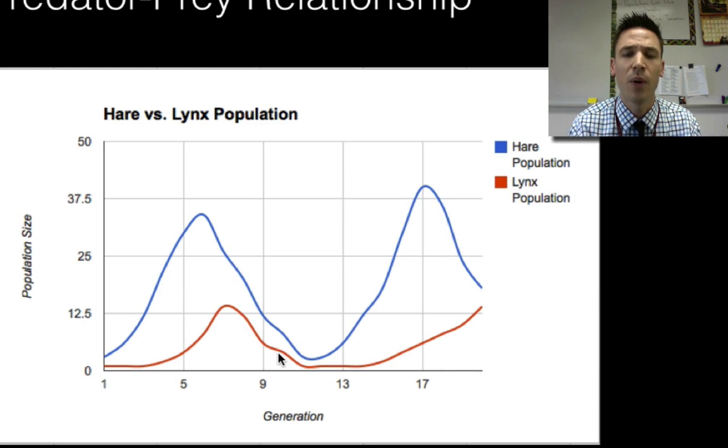When the hare population got really low, you notice the lynx population started to follow. One thing I just want to point out when we talk about predator prey is which one impacts which? Does the predator affect the prey or does the prey affect the predator? Well it's really both. When the prey population is really high the predator population can increase too, but when the predator population is really high the prey population starts to fall. They have this great relationship and keep each other in check.